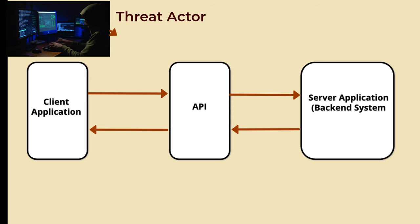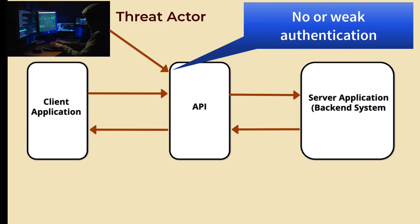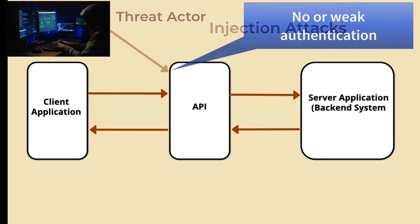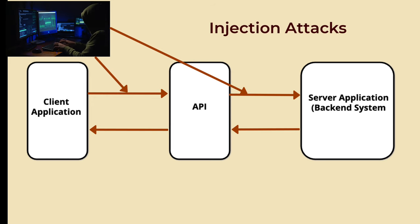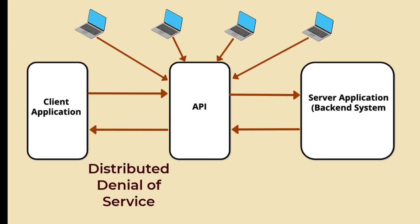One of the most prevalent vulnerabilities occurs when an attacker gains unauthorized access to an API by exploiting weak authentication mechanisms or poorly implemented access controls. This could result in unauthorized data exposure, manipulation, or even denial of service. Injection attacks occur when an attacker inserts malicious code or data into an API request or response, which can lead to code execution on the server side or unintended access to sensitive information. A denial-of-service attack aims to overwhelm an API server with a flood of requests, rendering it unresponsive or unavailable. This can be achieved by exploiting API implementation vulnerabilities or launching distributed attacks from multiple sources.